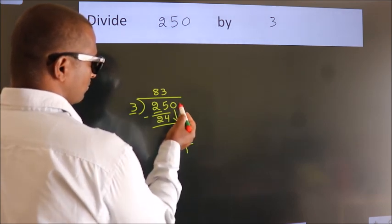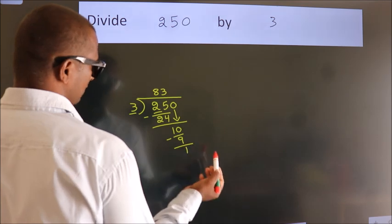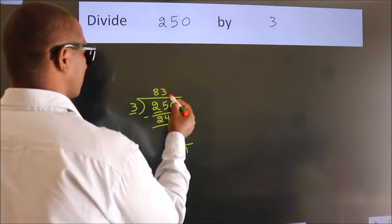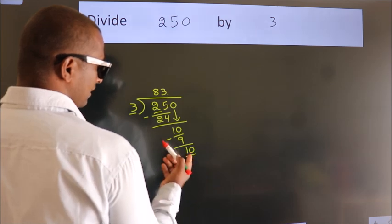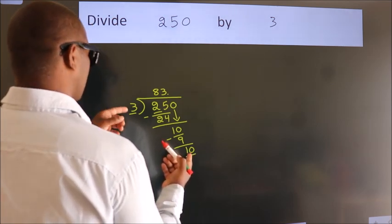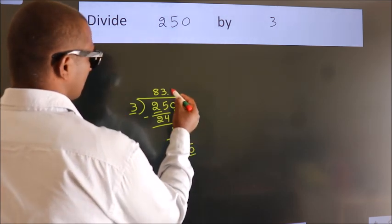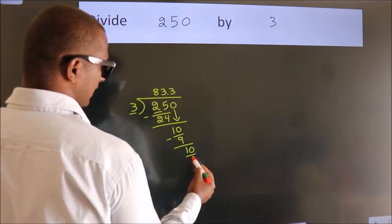After this, no more numbers to bring down. So what we do is, we add a decimal point and take 0. So 10. A number close to 10 in the 3 table is 3×3=9.